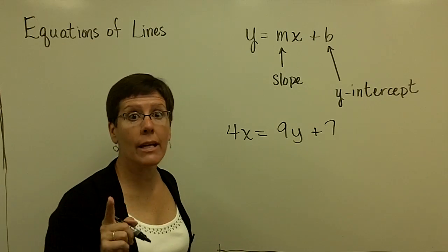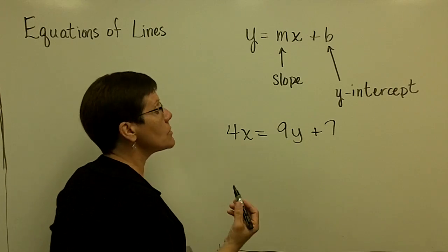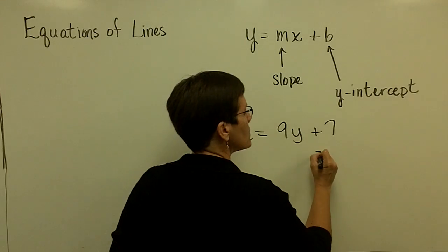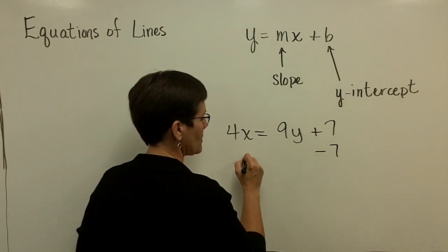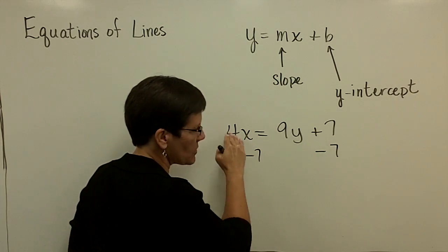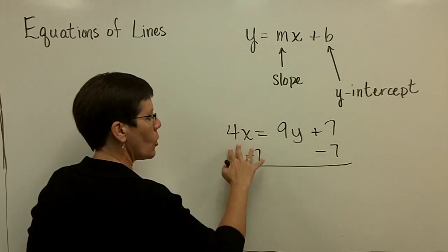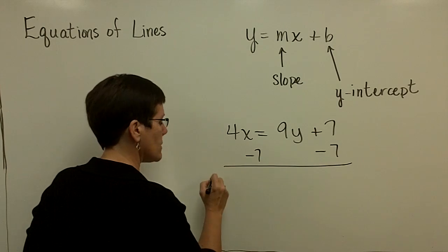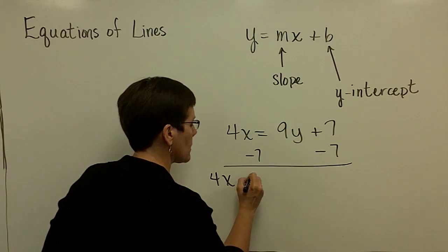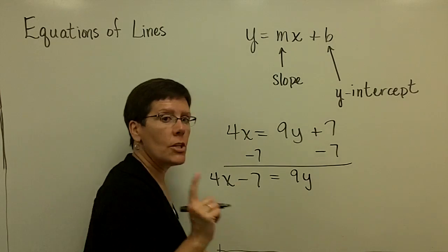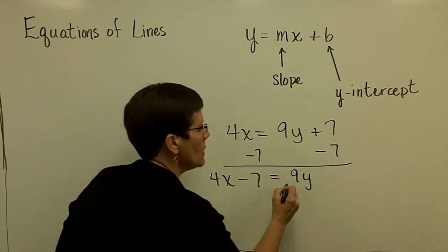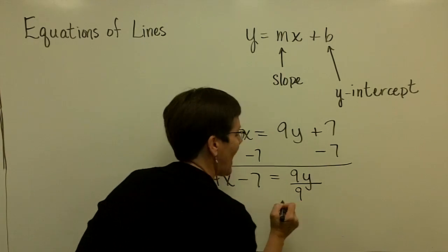Your goal is to always get y alone, so rearrange this equation for y. I'm going to subtract 7 from both sides of the equation - they're not like terms. So over here I have 4x minus 7 equals 9y. You're trying to get y alone, so we'll divide both sides by 9,